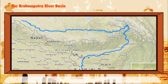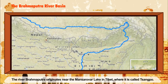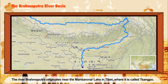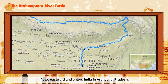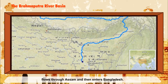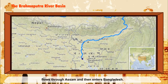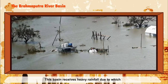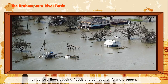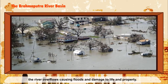The Brahmaputra River Basin: River Brahmaputra originates near Lake Manasarovar in Tibet, where it is called the Tsangpo. It flows eastward and enters India in Arunachal Pradesh, flows through Assam, and then enters Bangladesh. This basin receives heavy rainfall, due to which the river overflows, causing floods and damage to life and property.